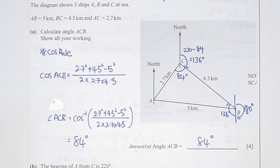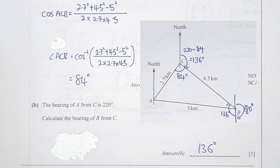Question 21a: calculate angle ACB. Since we have all sides of the triangle, I use the cosine rule in reverse, getting 84 degrees. Combined with the bearing of A from C being 220 degrees, the 136 degrees gives the bearing of B from C.